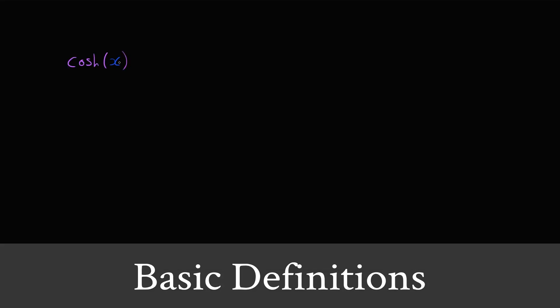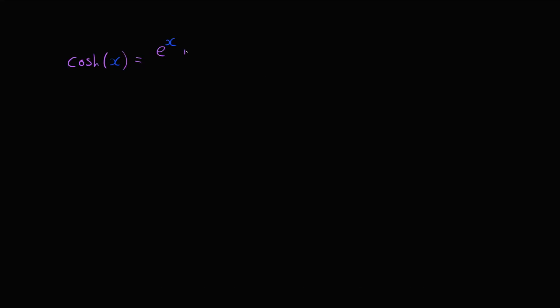As a quick reminder, we define cosh as e to the x plus e to the minus x over 2, and sinh as e to the x minus e to the minus x over 2.